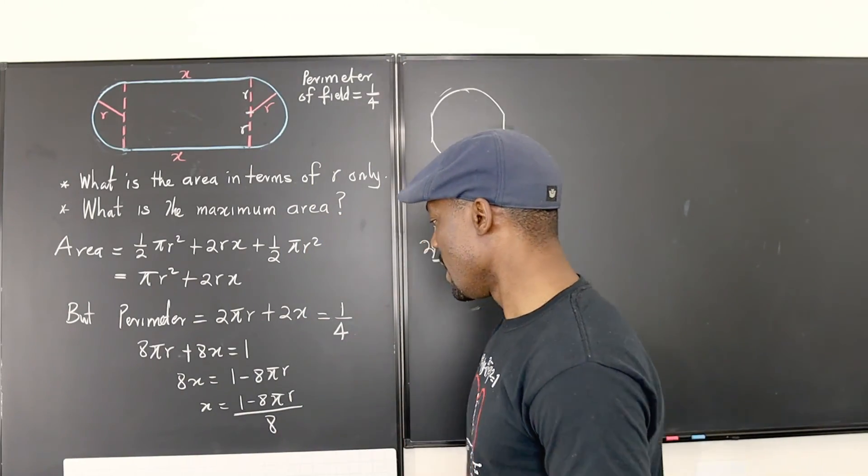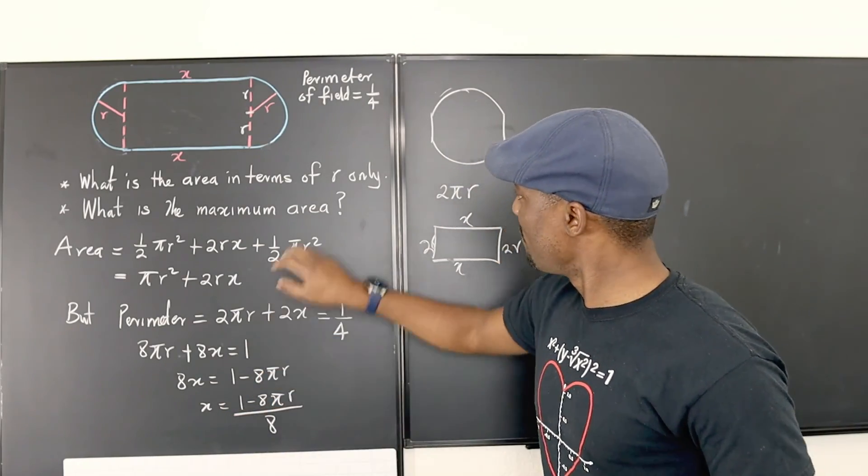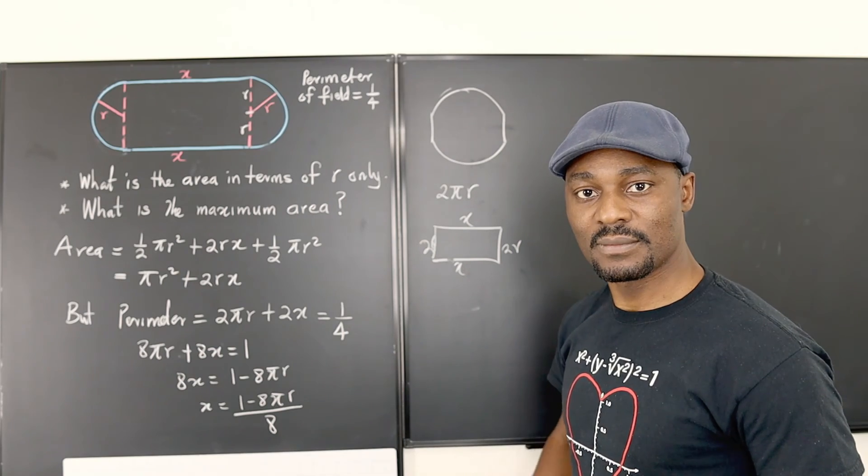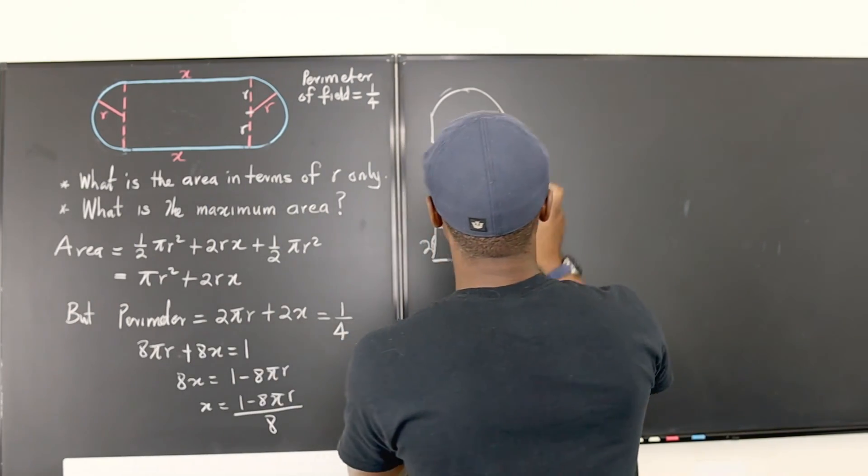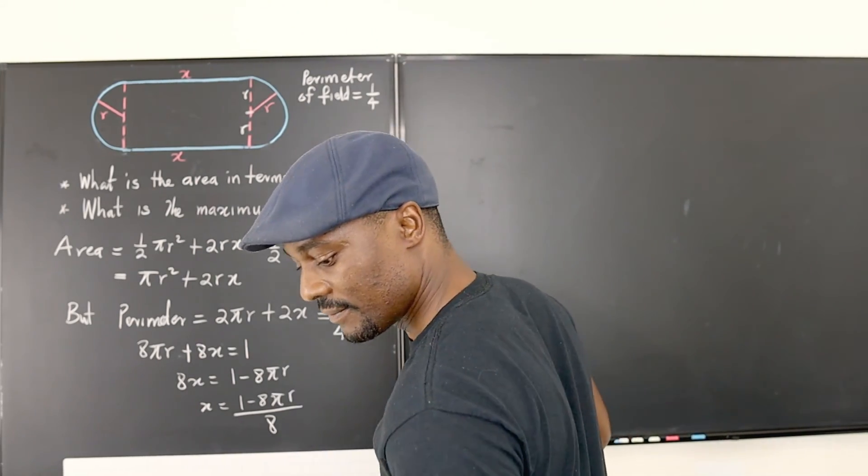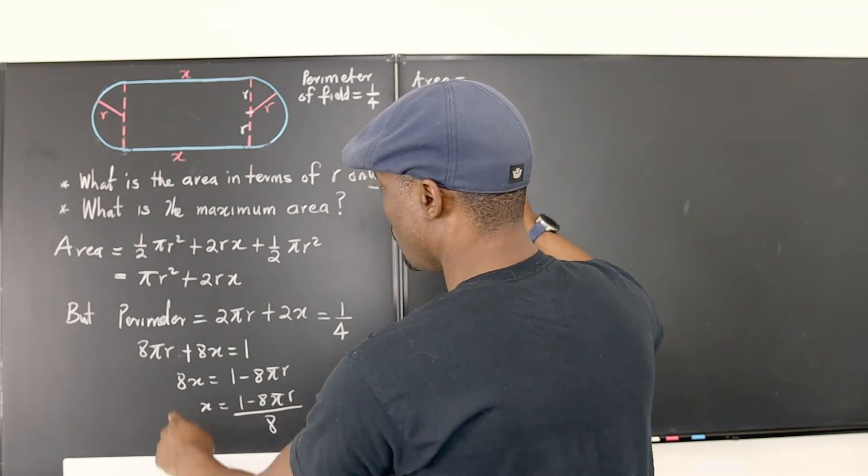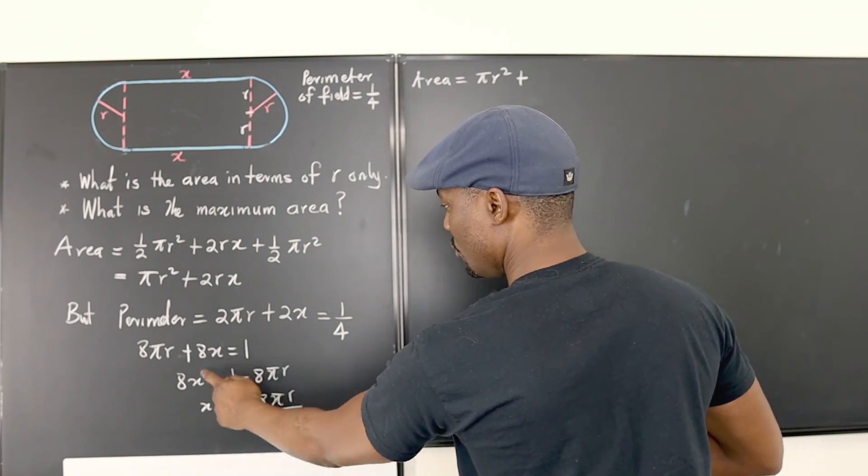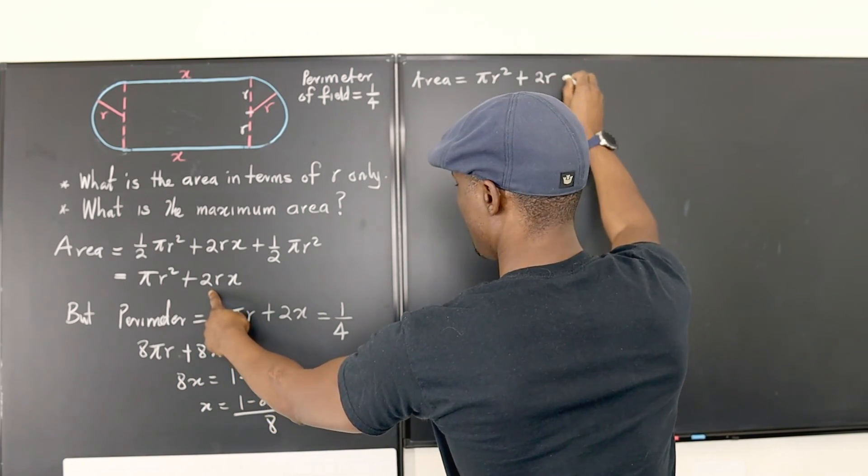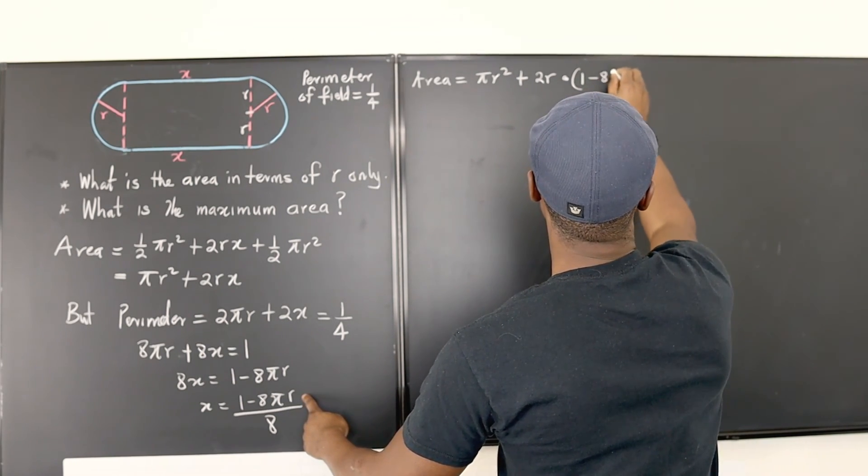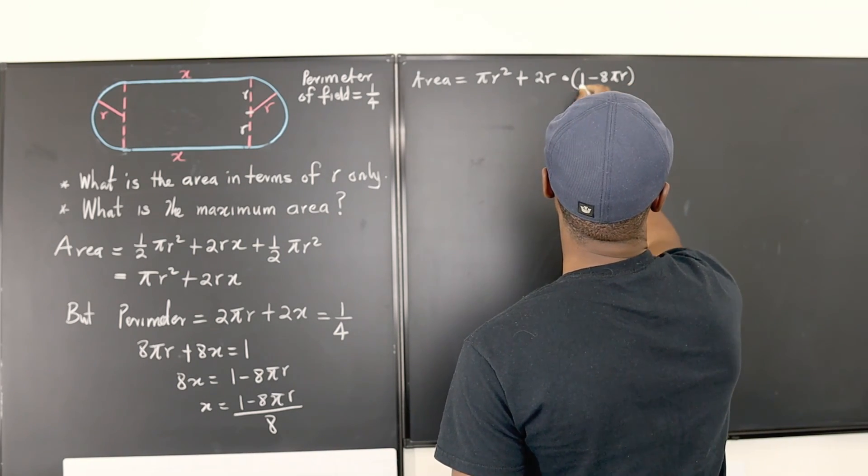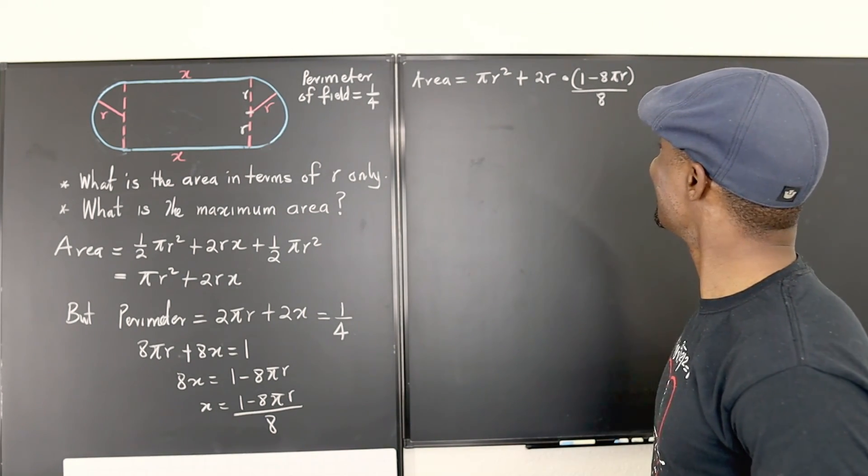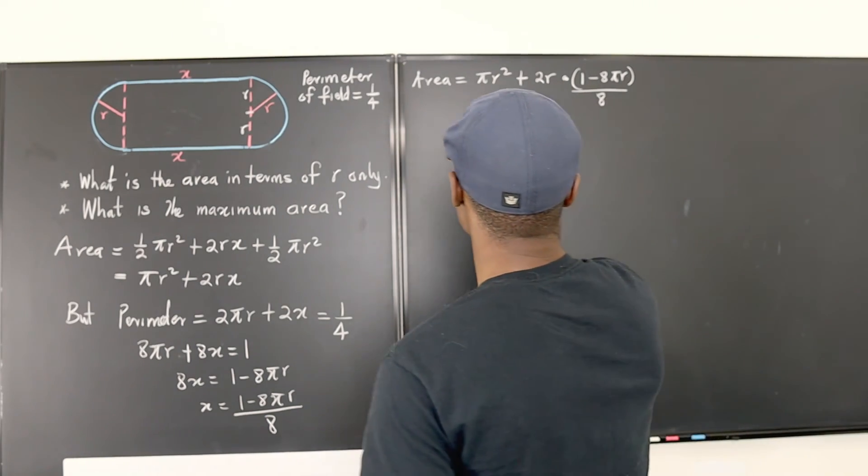P, E, A. Beautiful. So at this point, I'm done with the first part of the question. I just need to go plug in 1 minus 8 pi r over 8 in here for x. So let's do that. So we're going to say area will be equal to pi r squared plus 2 r multiplied by 1 minus 8 pi r over 8. If we open this, well, you could leave this as the answer if, I don't know, but it doesn't look beautiful. So let's simplify it and make it easier on the eyes.